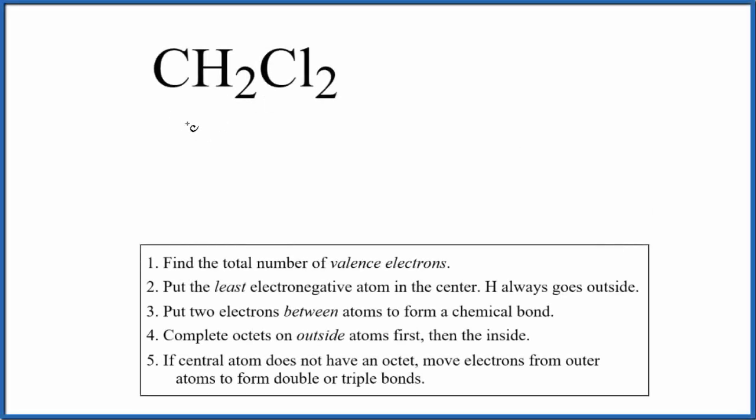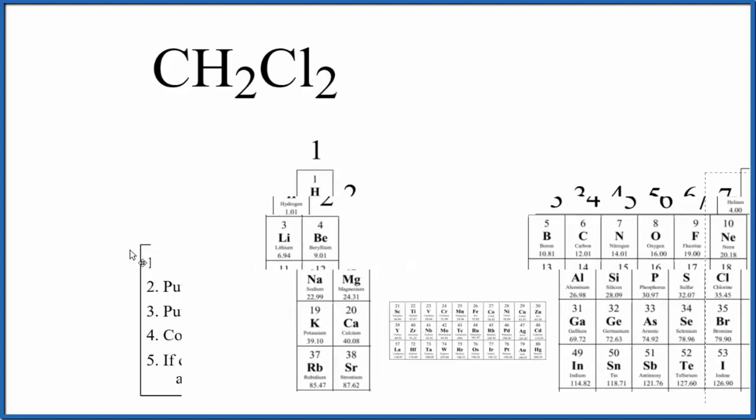Let's draw the Lewis structure for CH2Cl2. This is dichloromethane. So the first thing we do with Lewis structures like dichloromethane, we count the total number of valence electrons.